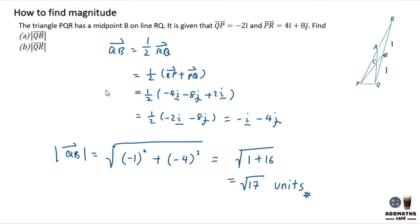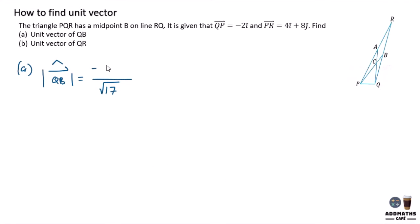So if we look back, QB vector is negative I, negative 4J. So just apply negative I, negative 4J. And this is your answer.